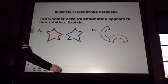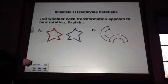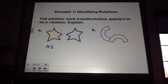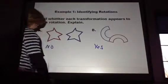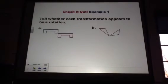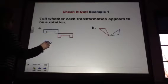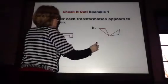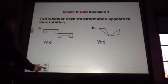Okay, examples of rotation. Is A a rotation? Looks like a flip to me, so it looks like a reflection. What about B? Yes, that is rotation. What about A? Nope, looks like a translation, a slide down and over. And then what about B? Yes, that is a rotation. It is a turn around a fixed point there.